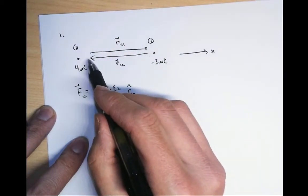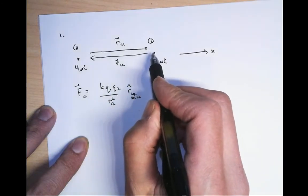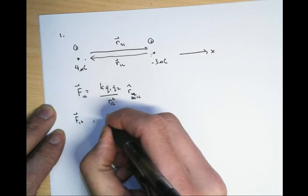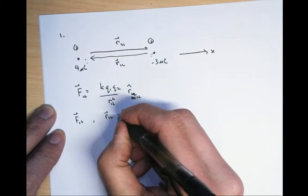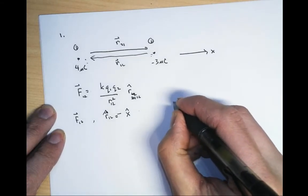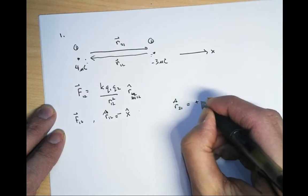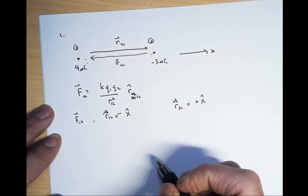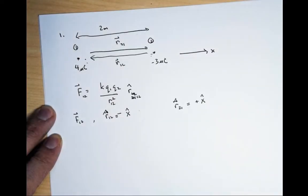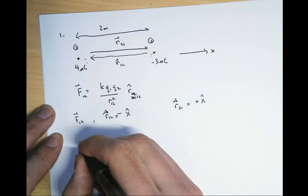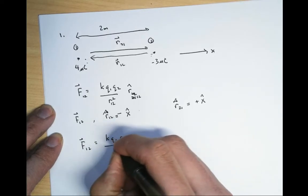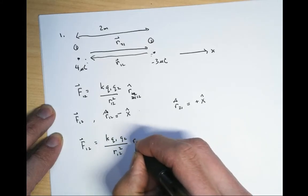The force on one by two: r12 points in the minus x-hat direction, and likewise the force of two on one, this vector, is going to be in the positive x-hat direction. This distance here is two meters.